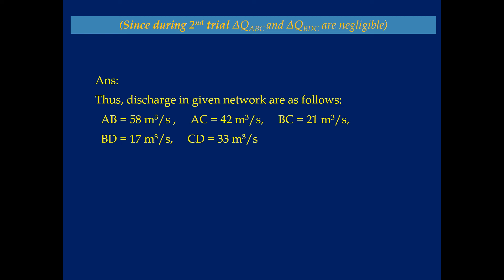The final results for discharge in the given network are: AB = 58 m³/s, AC = 42 m³/s, BC = 21 m³/s, BD = 17 m³/s, and CD = 33 m³/s.